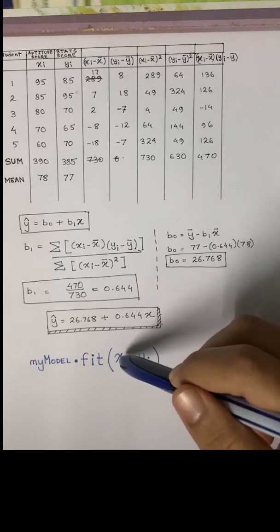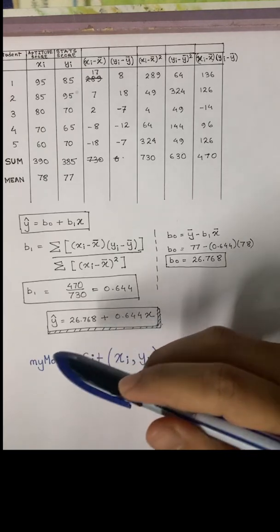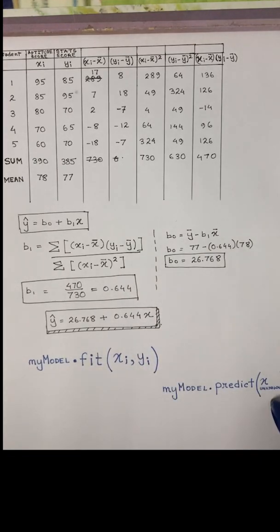This is the training data, and the next line that generally follows is the same model, my model dot predict, and new test data - the unknown variable for which inputs we are going to predict the results. The motive of this video is to understand what happens inside this fit function.